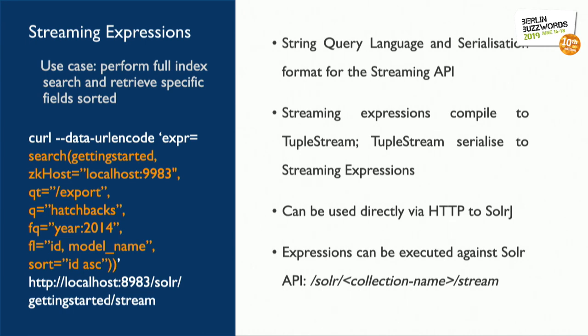This 'getting started' collection is hosted on a Solr cluster whose ZooKeeper string is localhost 9983. We only want to retrieve documents which have the keyword 'hashtags', limiting our result set to the year 2014, and retrieving field values ID and model name.